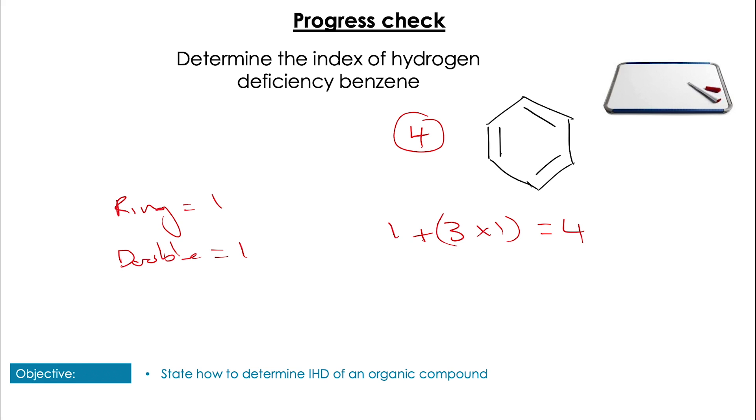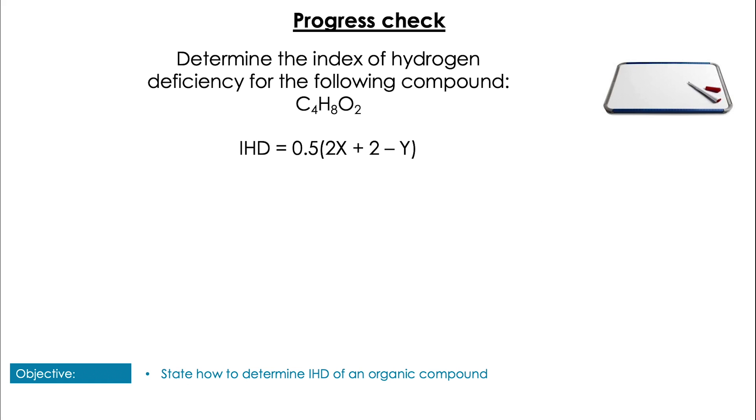Well, you might have just remembered this one was 4, but you could have also worked it out from knowing that every ring gives us 1 and every double bond gives us 1, giving us a total IHD of 4.